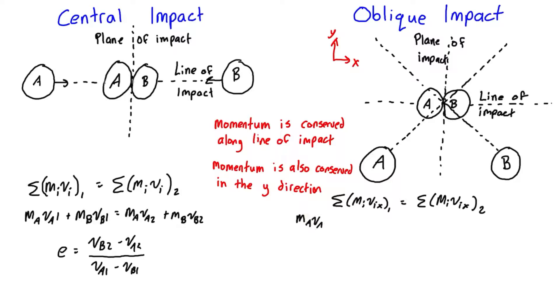We could expand it out. It would just be m_A v_Ax1 + m_B v_Bx1 and then v_A2x, v_B2x. So this is just one equation.